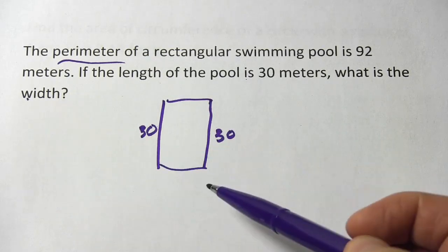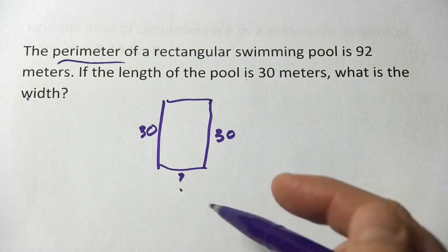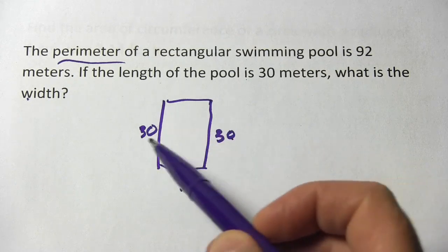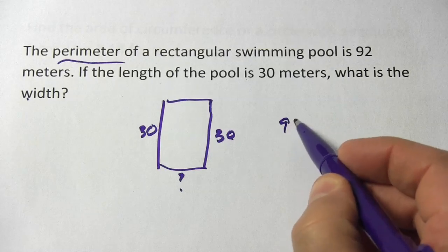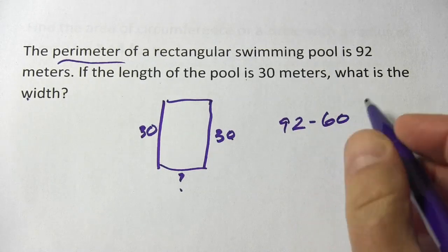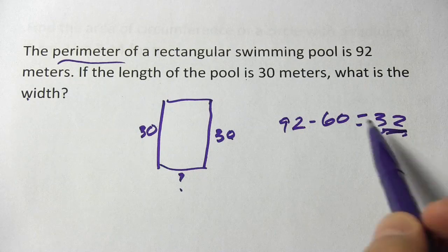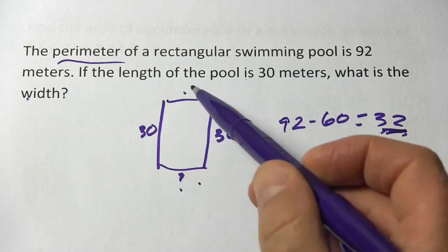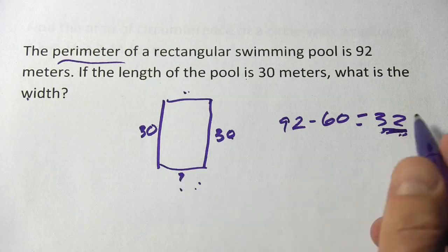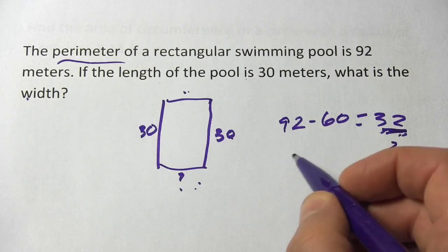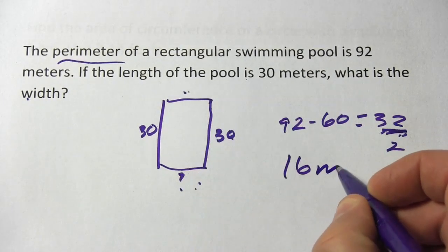We want to find the width. I can take these two sides and subtract them from 92. So 30 plus 30 is 60. 92 minus 60 equals 32. That's how much of the perimeter I have to split between these two sides. If I just divide that in half, I'll get the width. 32 divided by 2 is 16, and this was in meters.